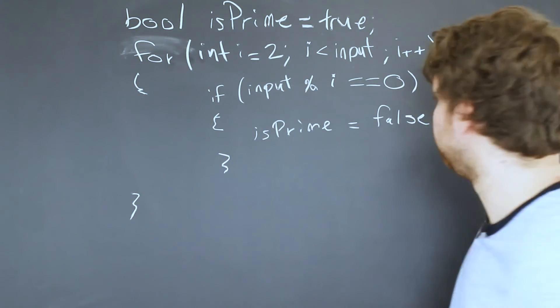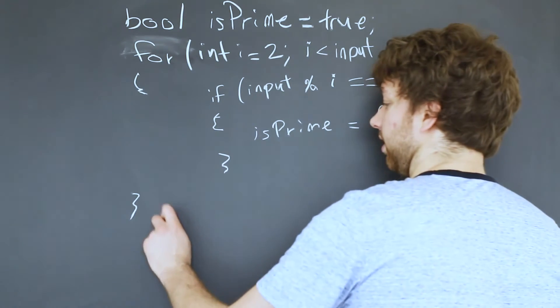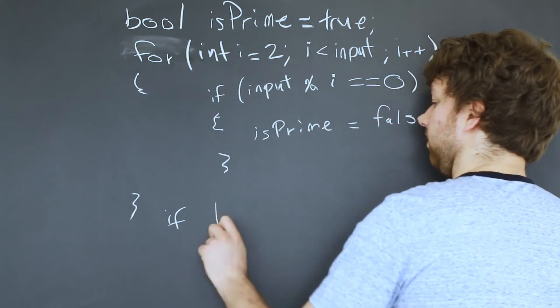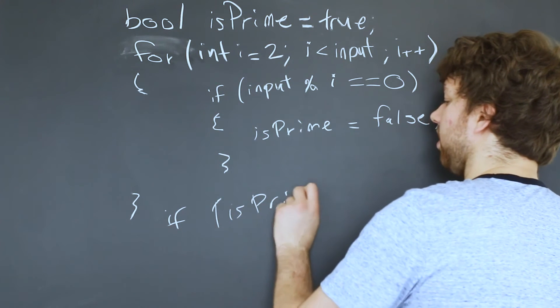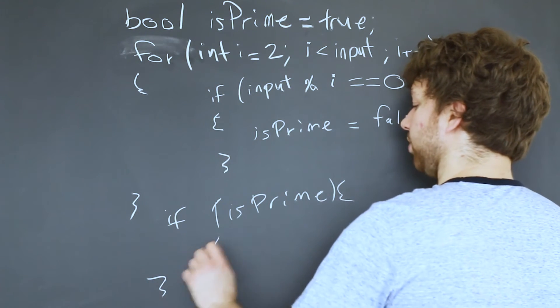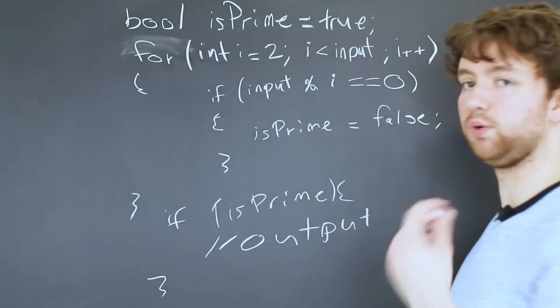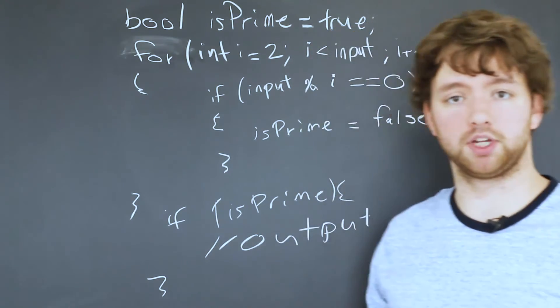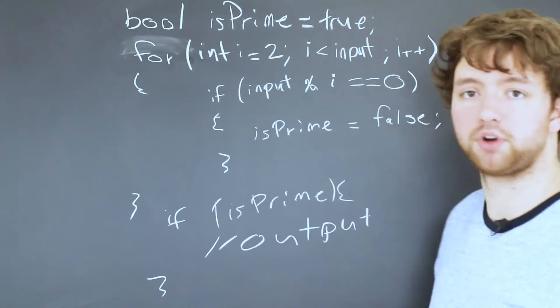Now since we have this variable isPrime, we could do an if statement down here after the for loop. We could say if isPrime, then we can do something with it. We could output it or increase the number of prime numbers we're counting. Whatever you want to do with it. This video is just focusing on how to tell if a number is prime.